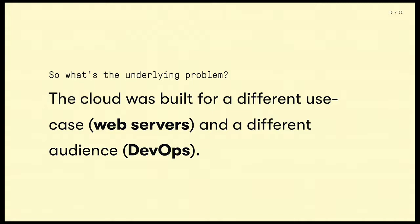So what's the underlying problem here? It really comes down to one thing. The cloud is sort of the perfect place to run these kinds of workloads, but the cloud, as we know today, was really built for the singular use case of deploying and managing web servers. Cloud products are really built for DevOps, and DevOps as an audience has almost nothing to do with deep learning practitioners.